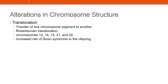In Robertsonian translocation, the long arms of two chromosomes fuse at the centromere and form a single chromosome. This type of translocation can occur in chromosomes 13, 14, 15, 21, and 22, because the short arms of these chromosomes are very small and do not contain any essential genetic material.